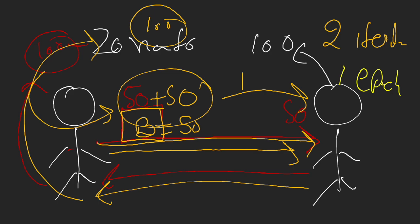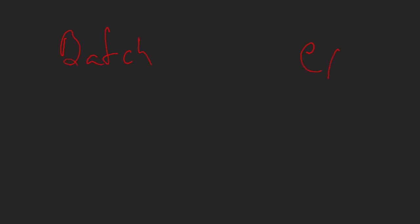When we design a neural network we specifically decide what the batch size should be and what the total number of epochs the model should be trained for. When we are creating a neural network we usually define batch size and epochs in advance. There is one more variable we can control — a hyperparameter called learning rate — but we are not going to discuss that in this tutorial. Different batch sizes and different epochs have varying impacts on the model's performance.